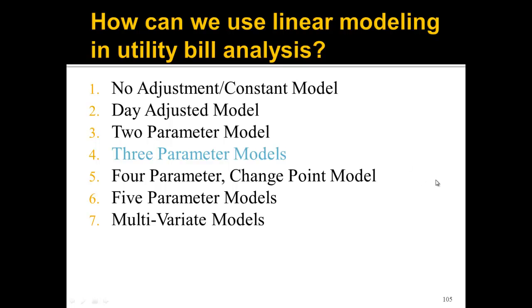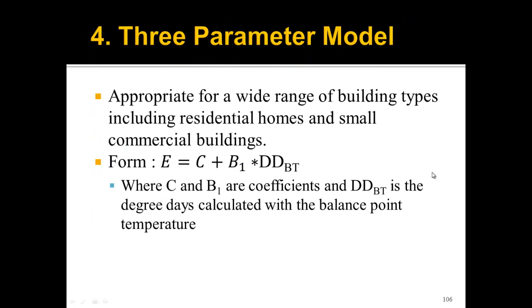Let's start with the three-parameter models. What's really nice about them is they're appropriate for a wide range of building types, including residential homes and small commercial buildings. This is what I'm going to ask you to use for your semester-long project because schools are small commercial buildings. They take the form: energy use equals a constant C plus a constant B1 times the degree days. But the degree days are calculated at a balance point temperature. That's what BT is. This is what we went over last class - how to calculate degree days at a certain balance point temperature.